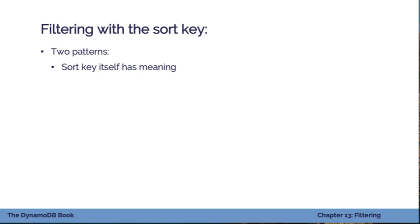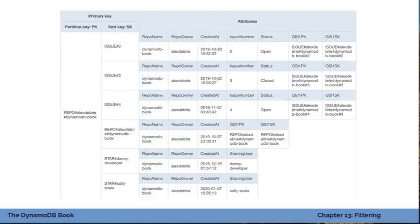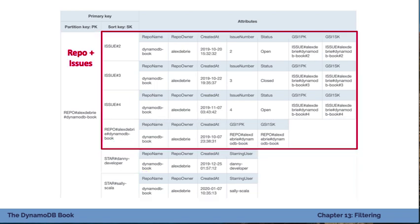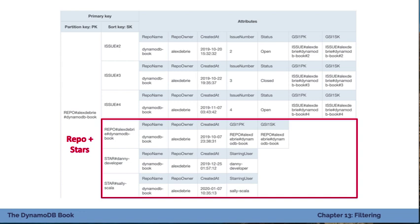A second and probably more common situation is when the sort key has meaning based on how you've modeled it. Using an example from the GitHub data modeling section, we have a single item collection modeling two one-to-many relationships. At the top in green are issue items, in the middle in blue is a repo item, and below in purple are star items. Based on what access pattern we want, we use different conditions on the sort key — for example, getting the repo and all its issues, or the repo and all its star items. The sort key is arbitrary, defined by us to enable these access patterns, not inherently meaningful like the timestamp was.